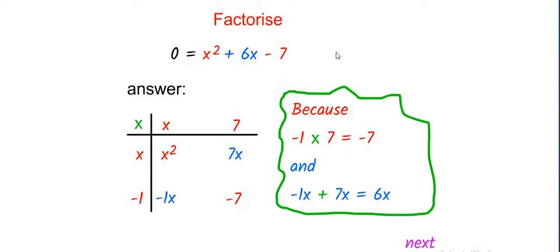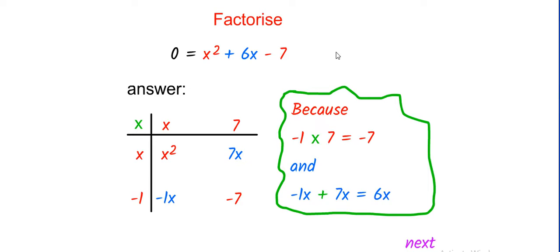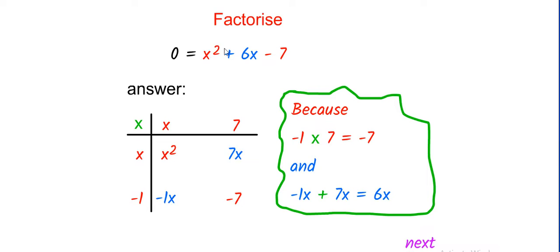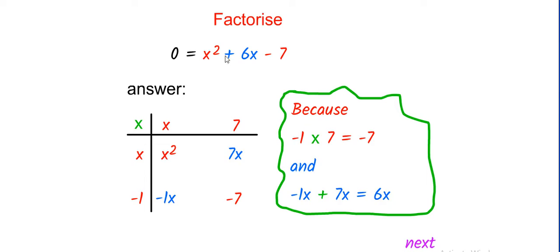Today we will discuss how to factorize quadratic equations. For example, here I have x squared plus 6x minus 7 equal to 0. How do we factorize it?